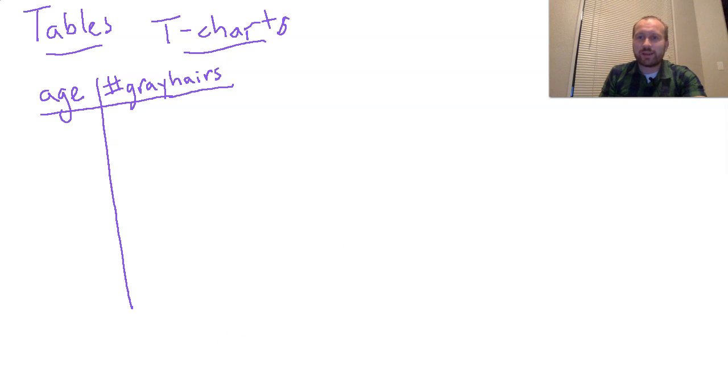So we can really put any data into a table in some way. When I was 18 is when I had my first gray hairs pop up. There were maybe 10. When I turned 20, I still had about 10.